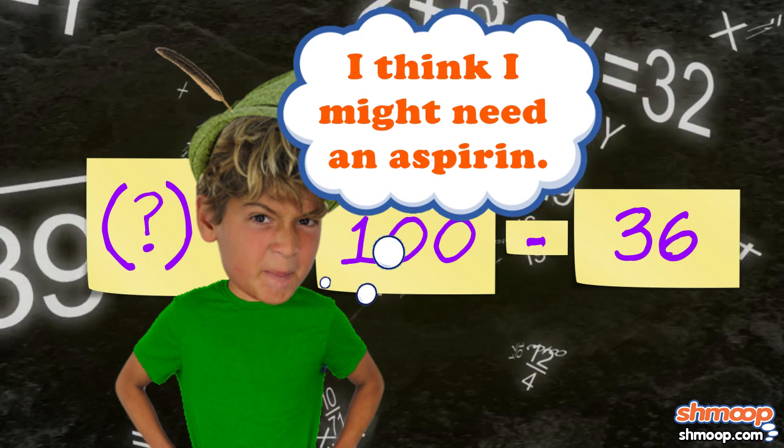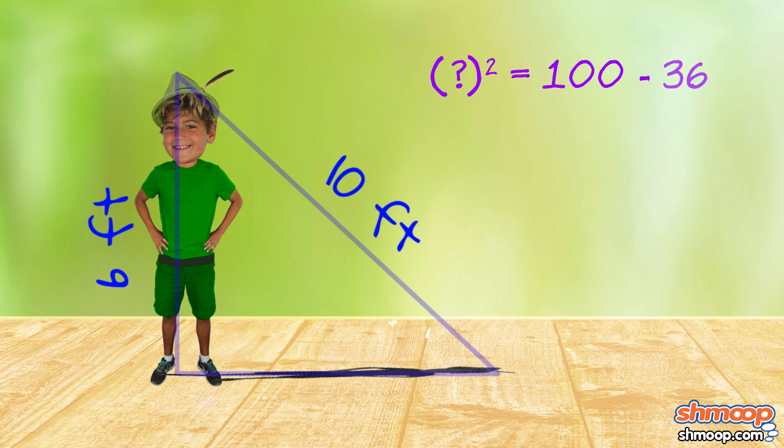So let's do the math. 100 minus 36 is 64, and the square root of 64 is 8.